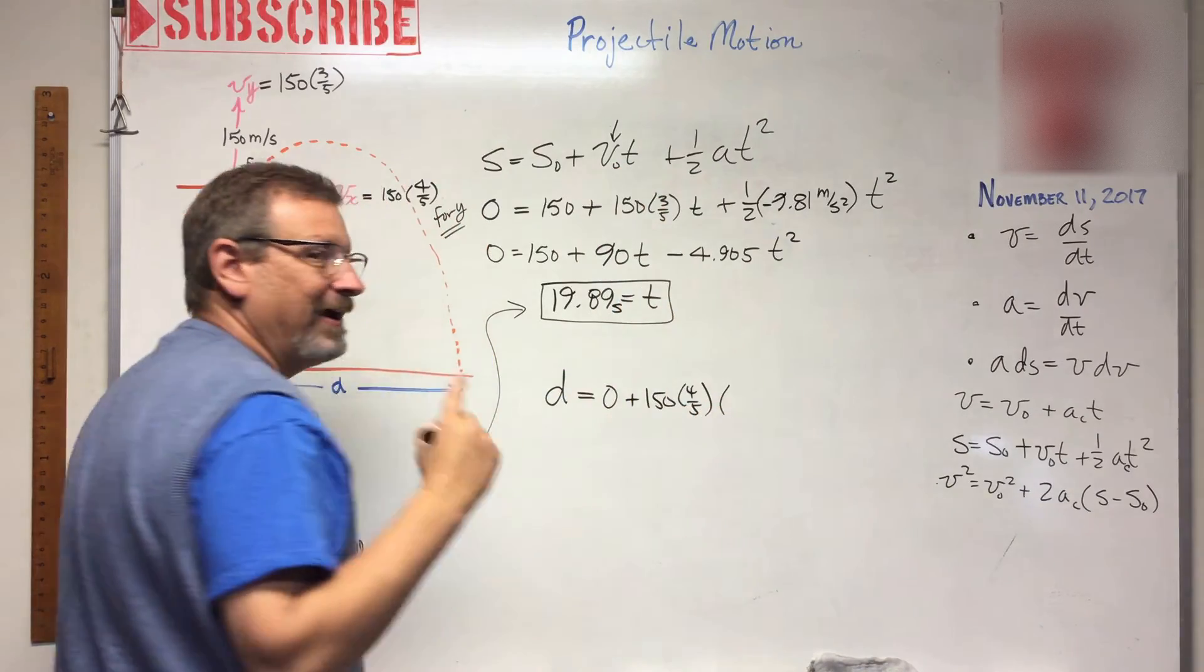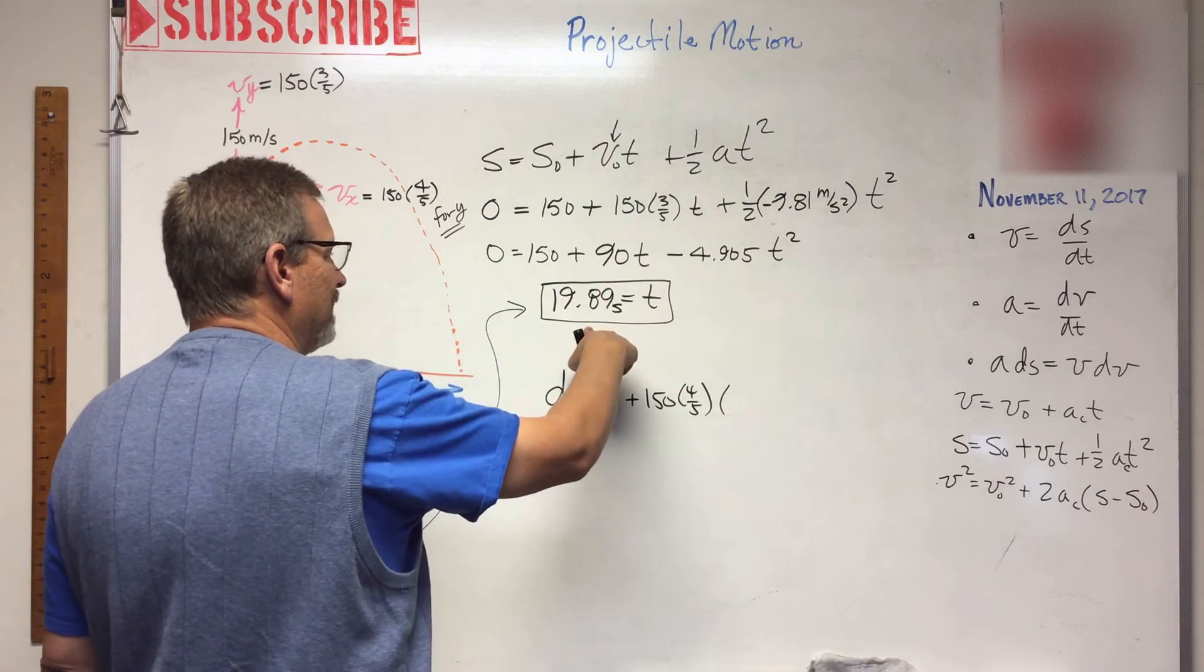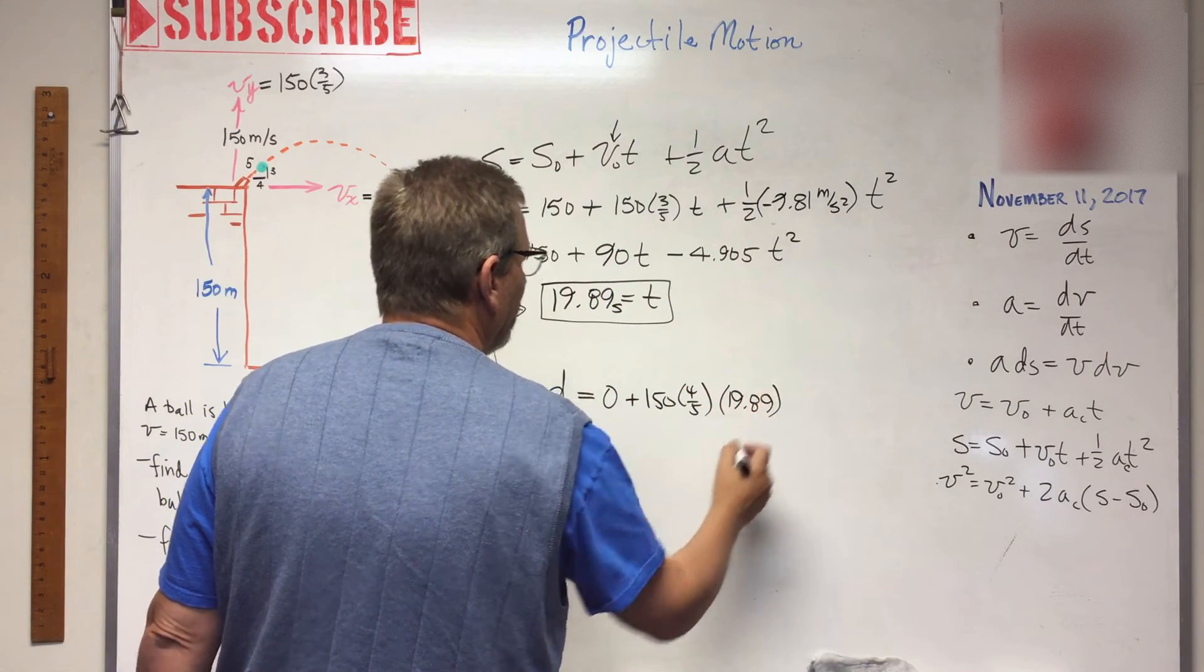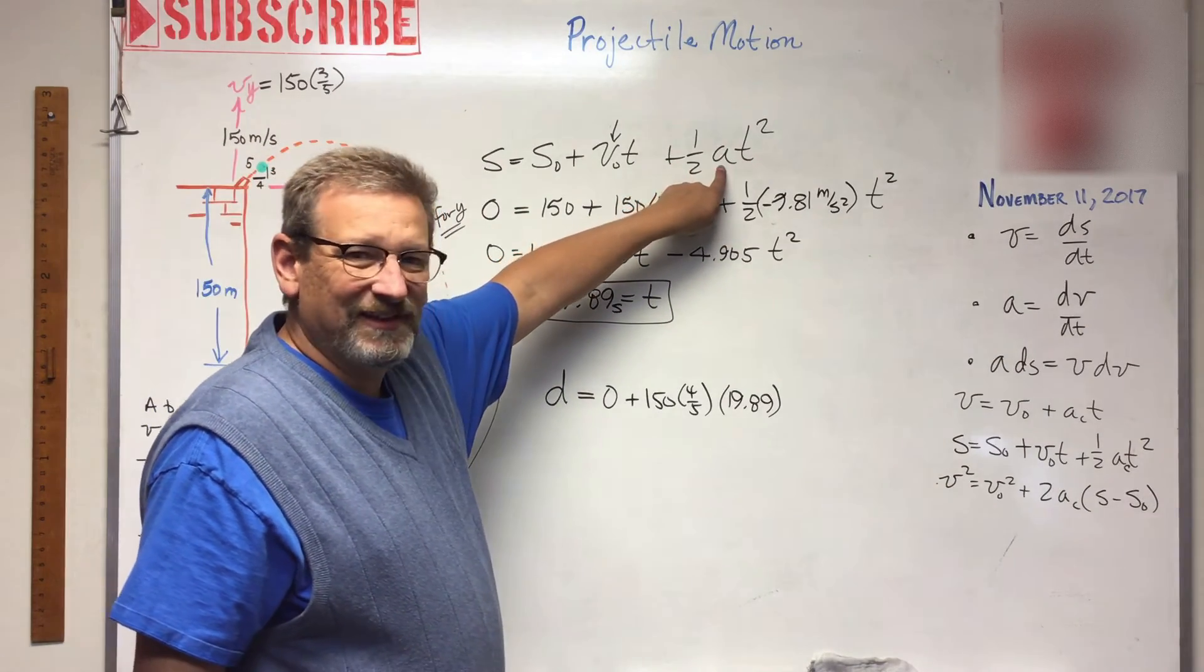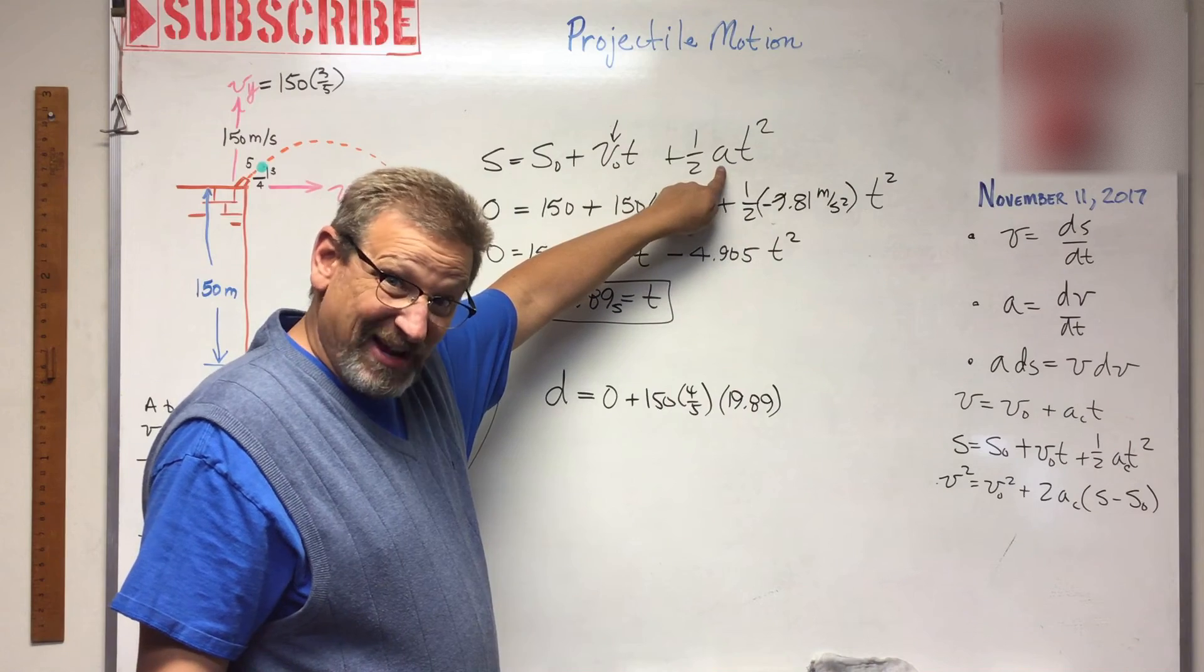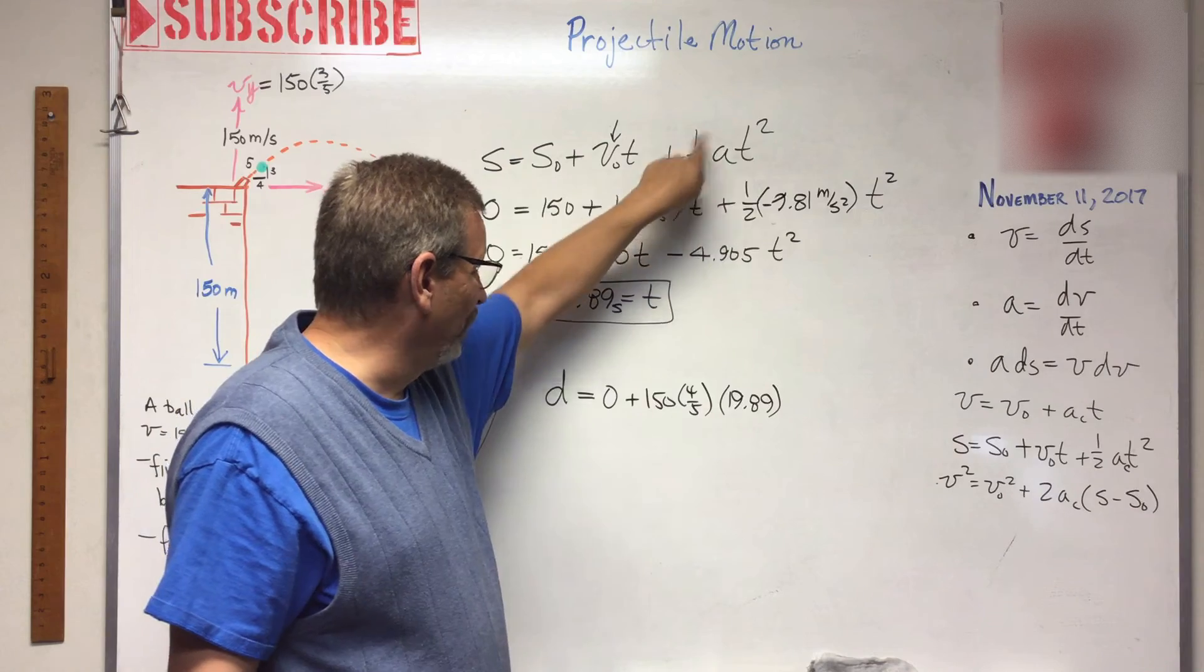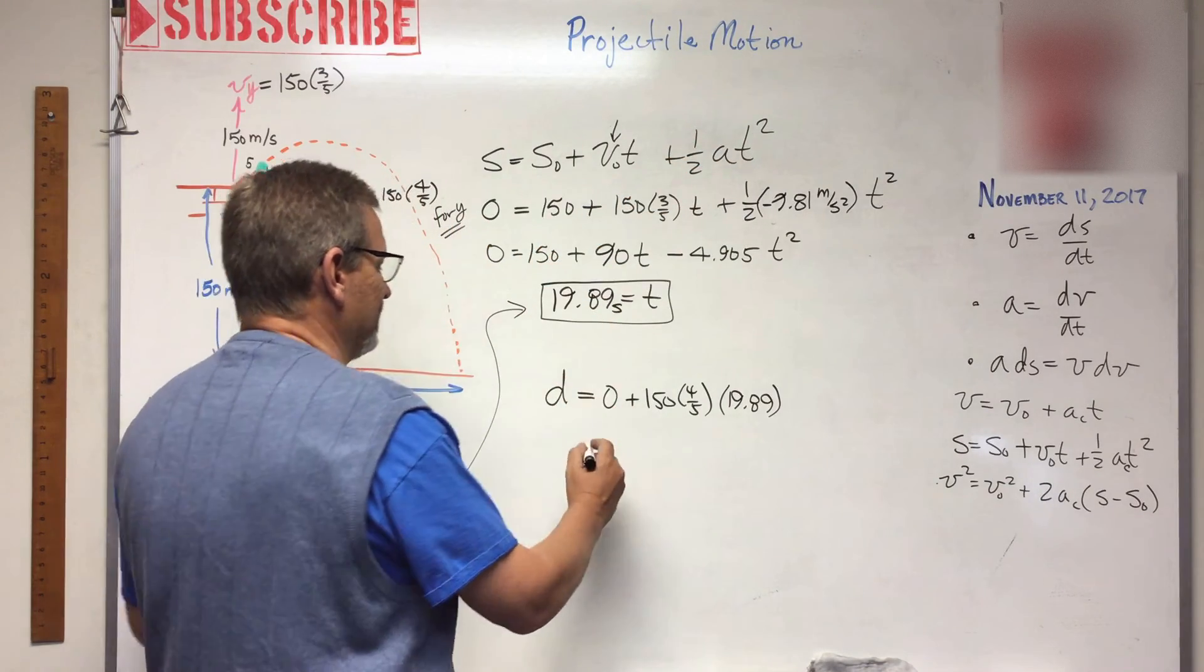The velocity, the initial velocity, the initial velocity in the x direction is what, right there. So plus 150 times 4 over 5 times t. Oh, but you know what? I know what t is. T is 19.89. And then what? Plus one half, what is the acceleration in the x direction?